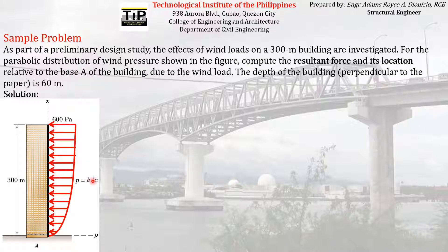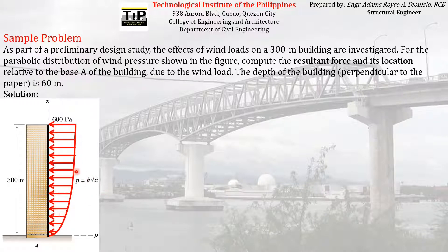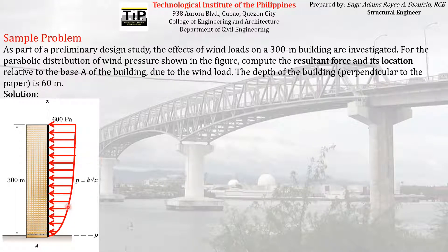The magnitude is equal to the product of k and the square root of x, where x is the distance of that particular wind pressure from the base. That is how the wind pressure works — its magnitude varies and follows a parabolic equation. What is being asked is the resultant force of these wind pressures acting all throughout the height of the building, as well as its location relative to the base.